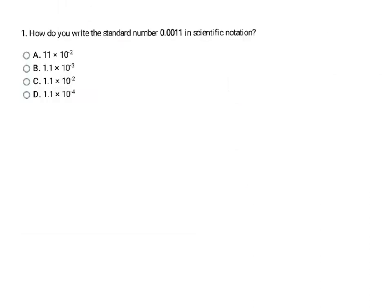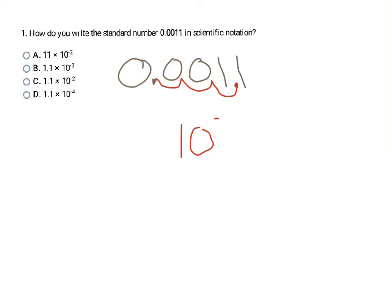Here I'm going to copy down the number so it's bigger and easier to see. They want us to take this standard form and write it in scientific notation. I need to move the decimal 3 units to the right to create a number greater than 1 but less than 10. So my exponent is negative 3, since I moved it to the right and it started as a small number. I can drop all those zeros, and the number out front is 1.1, which makes my final answer B.